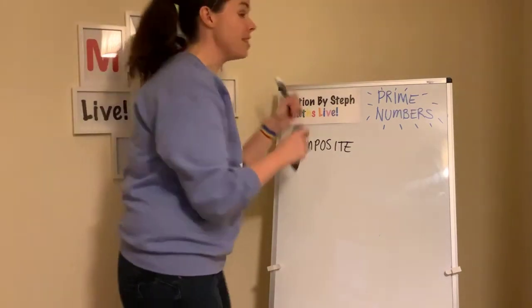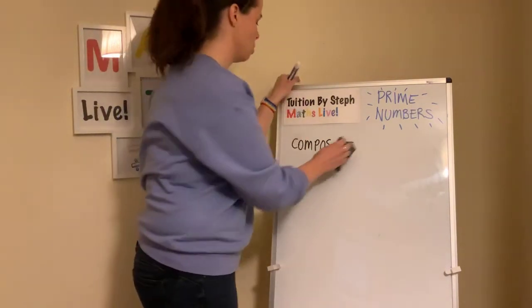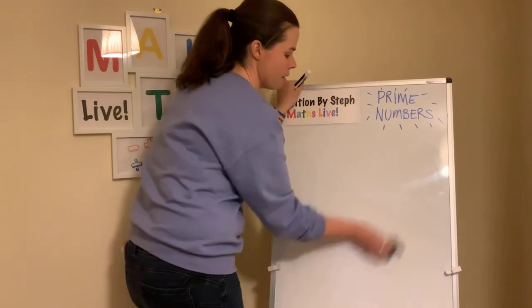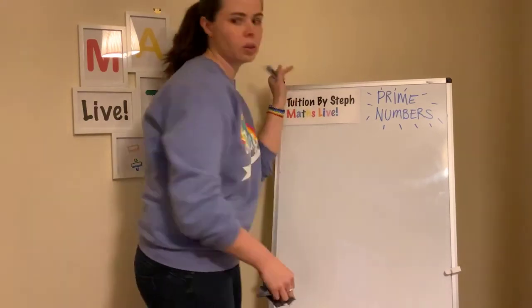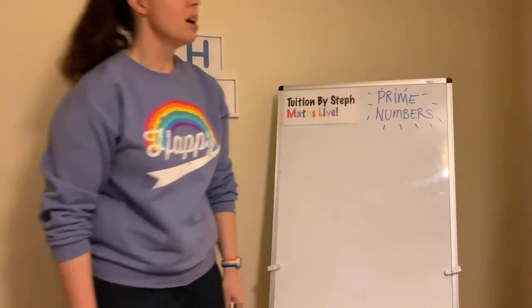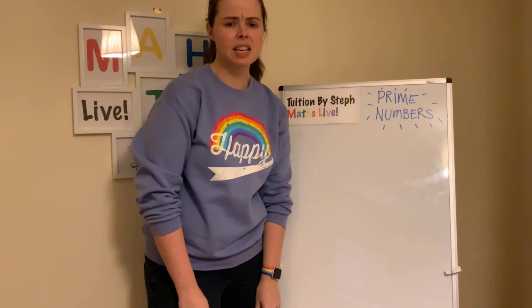And zero is a placeholder. So one is composite and zero is a placeholder. So we've done all the numbers up to nineteen. Have I finished the lesson? Not quite.